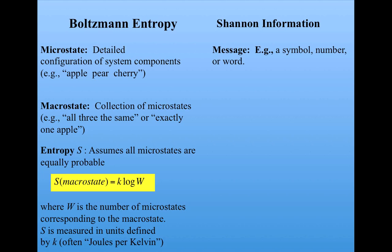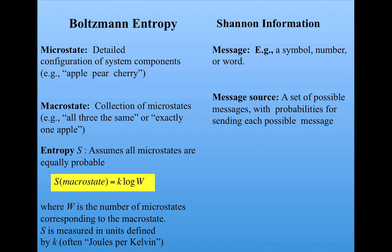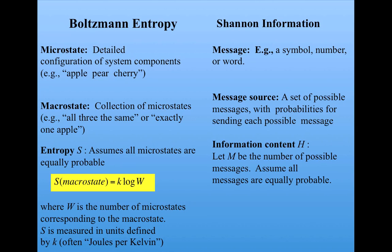Now, returning to our analogy, the Shannon information version of a microstate is a message, a symbol, number, or word. And the Shannon information version of a macrostate is a message source, which is a collection or set of possible messages with some probability for sending each possible message. Just as we did for Boltzmann entropy, we're going to assume here that all the messages are equally probable, with m being the number of messages.